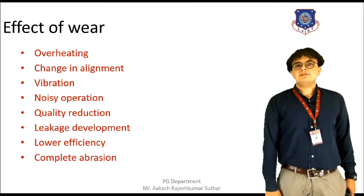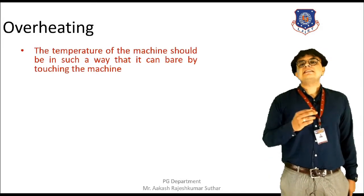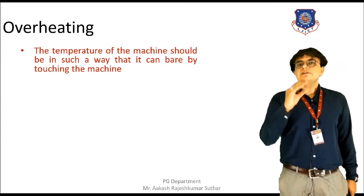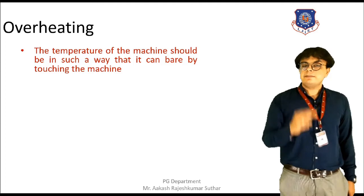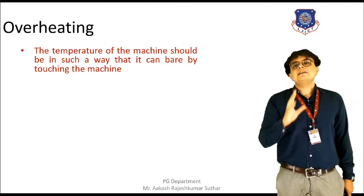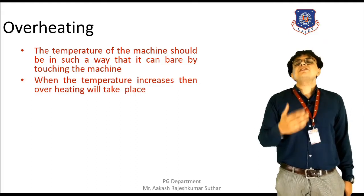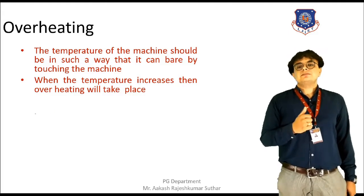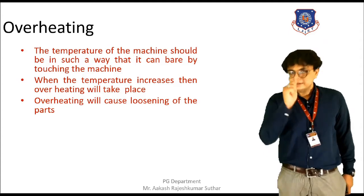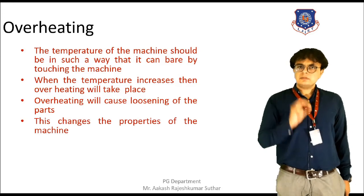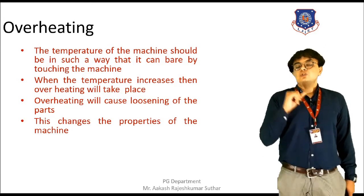We will have a brief discussion on each. First topic is overheating. We all know that a machine that is designed should have some design temperature — a standard temperature that it can resist. But due to some occurrence or overloading, the temperature increases beyond what the machine can tolerate. As a result, loosening of parts will occur, the machine's spare parts will start loosening, its load-taking capacity will be reduced, and ultimately the properties will also get reduced. This is how overheating affects the machine.